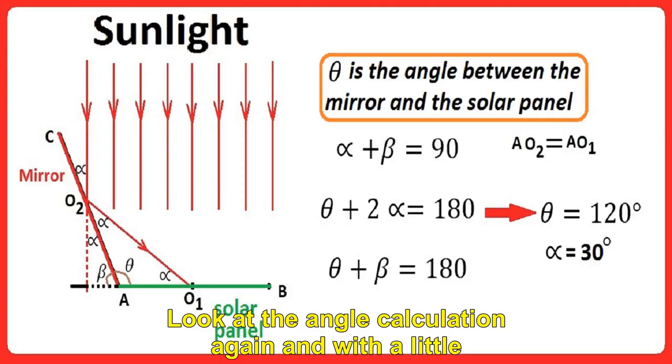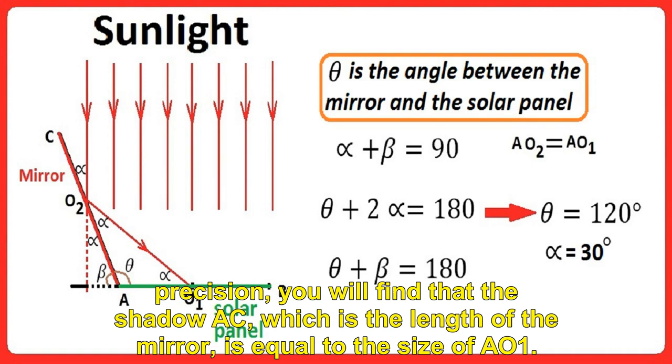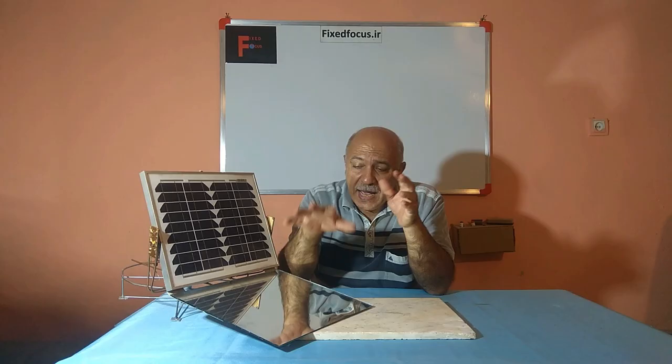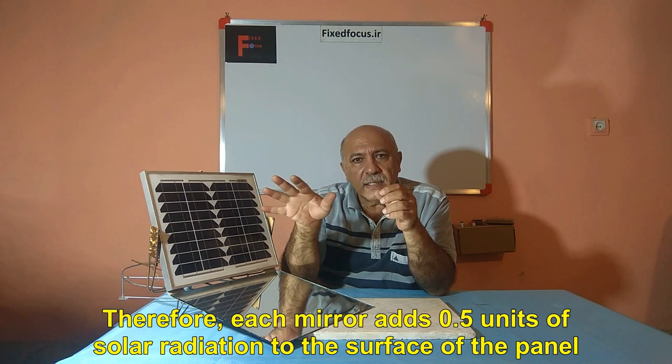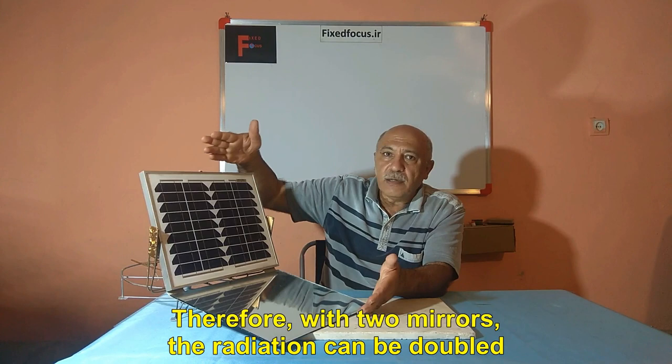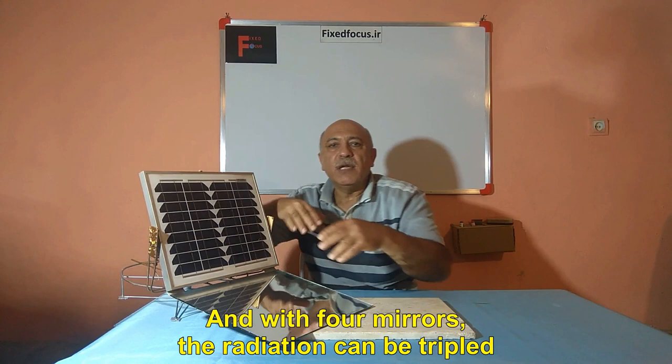Look at the angle calculation again, and with a little precision, you will find that the shadow AC, which is the length of the mirror, is equal to the size of AO1. Therefore, each mirror adds 0.5 units of solar radiation to the surface of the panel. With two mirrors, the radiation can be doubled, and with four mirrors, the radiation can be tripled.